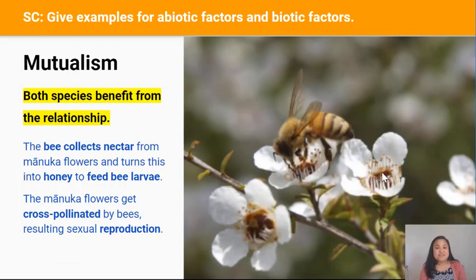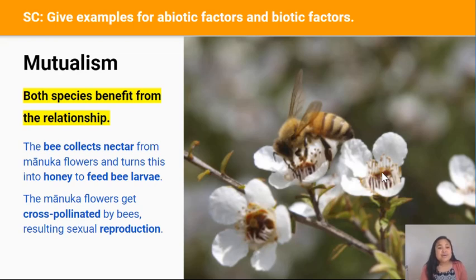Mutualism is the type of species interaction where both species benefit from the relationship. For example, both the honeybee and manuka plant benefit from this interaction because the honeybee collects nectar from the manuka flower, which it needs to make honey to feed the larvae in its hive. Meanwhile the manuka flower gets to spread its pollen to other manuka plants through the honeybee, resulting in sexual reproduction.